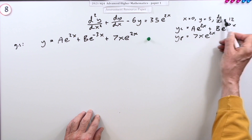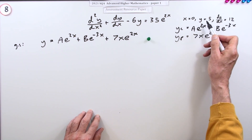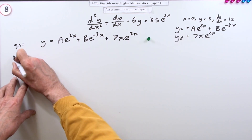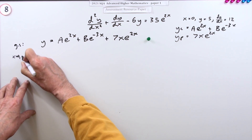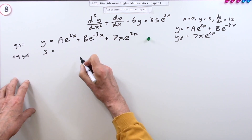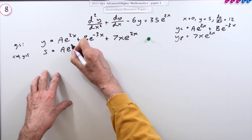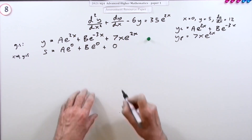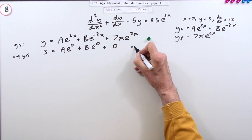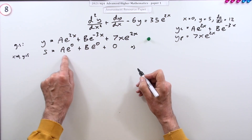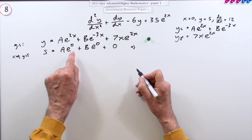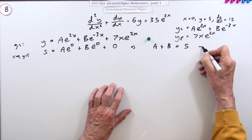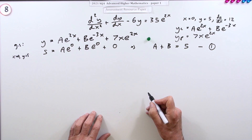The initial conditions give values at x = 0. Applying the first condition, y(0) = 5: substituting x = 0 gives Ae^0 + Be^0 + 7(0)e^0 = 5, and since e^0 = 1, this simplifies to A + B = 5.